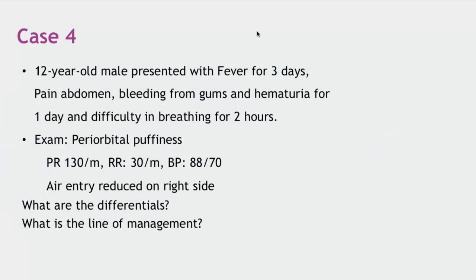Case 4 presents a very common scenario: a 12-year-old male child with history of fever for three days, pain abdomen, bleeding from gums, and hematuria for one day, and difficulty in breathing for two hours. On examination, the child appears puffy with periorbital and facial puffiness. He is tachycardic at 130 per minute, respiratory rate 30 per minute, BP 88/70, and air entry reduced on the right side. What are the differentials and line of management?